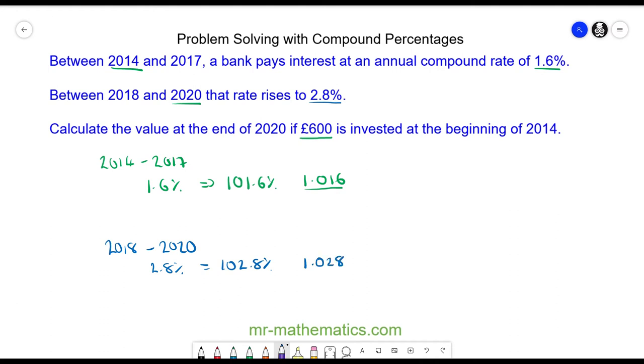To work out the interest gained in this period, we have £600 multiplied by 1.016 to the power of 3. Three because this is the number of years, and this comes out as £629.26.